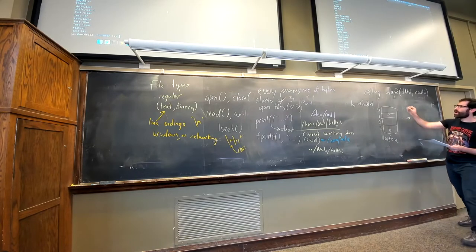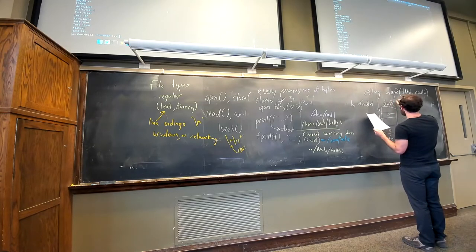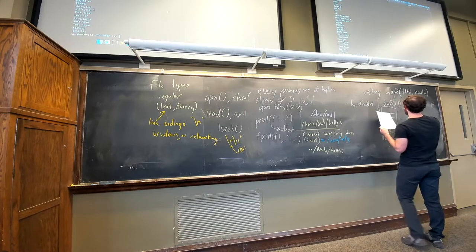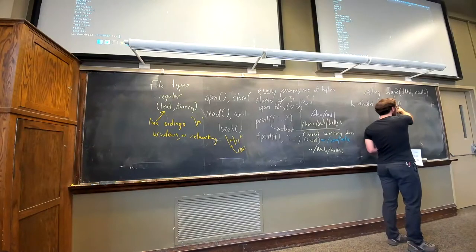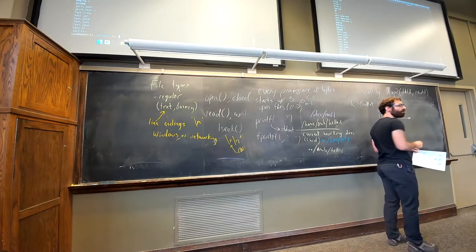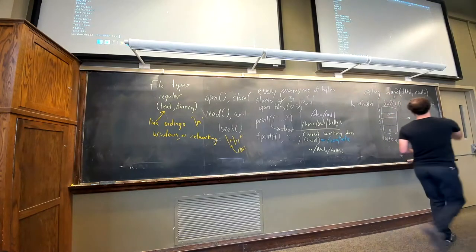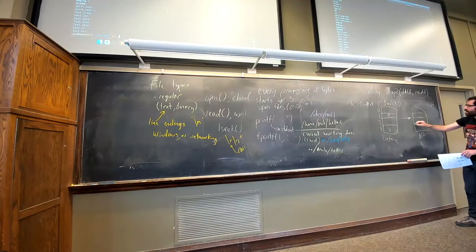When we call dup2(3, 1) — we're saying make file descriptor 1 also refer to whatever file descriptor 3 refers to.